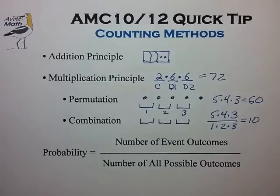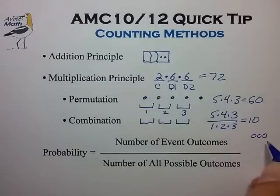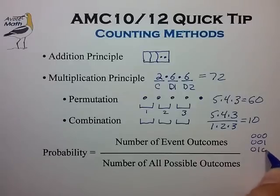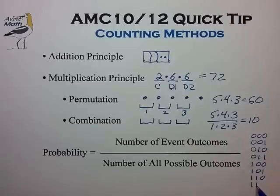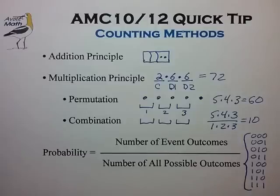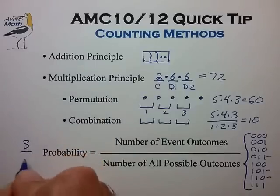A simple example is tossing three coins and finding the probability of getting exactly two heads. For three coins, we can list all possible equiprobable outcomes just like counting in binary, and we find that the number of all possible outcomes is eight. Three of these outcomes have exactly two heads, so the probability we seek is simply 3 divided by 8.